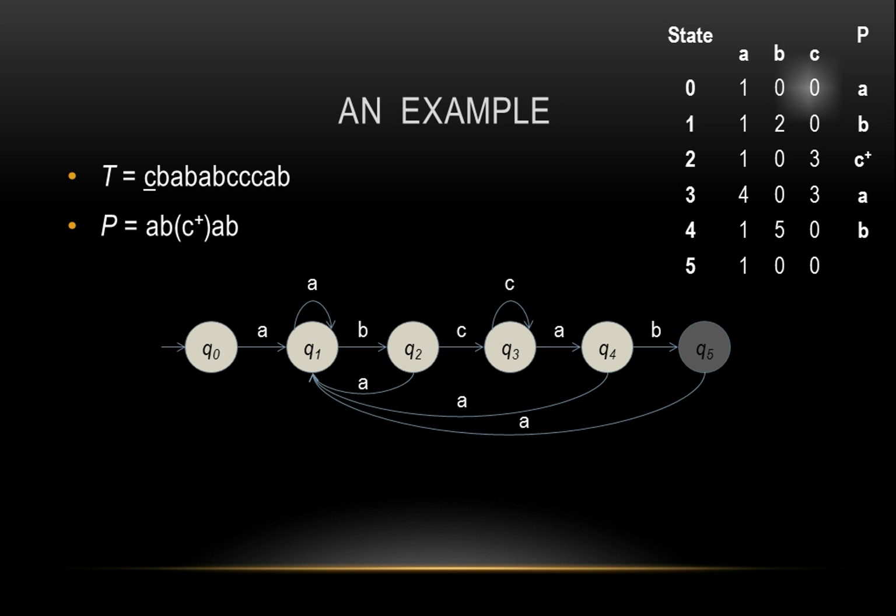First, we encounter a C character which is not the first character of our pattern, therefore, according to our transition table, we stay in state zero. The next character is B, which is also not a match with the pattern, so we read off the table that from state zero with a B we stay in state zero.